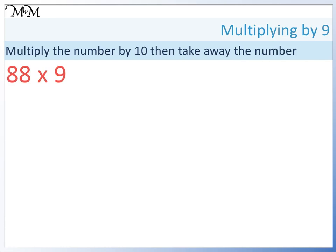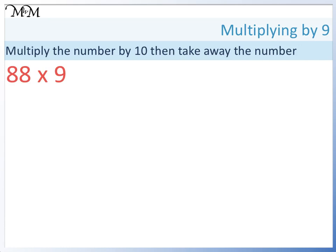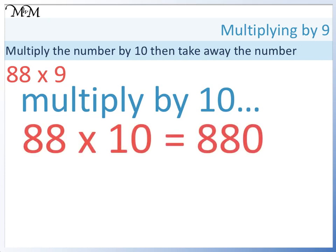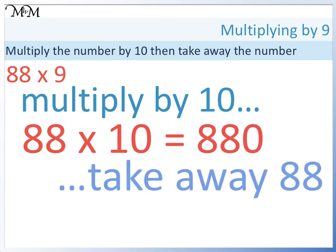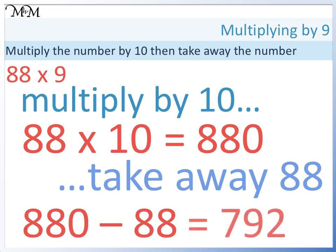88 times 9. Multiply 88 by 10. 88 times 10 equals 880. Again, we only want 9 lots of 88, so we need to take away 1 lot of 88. 880 take away 88 equals 792.